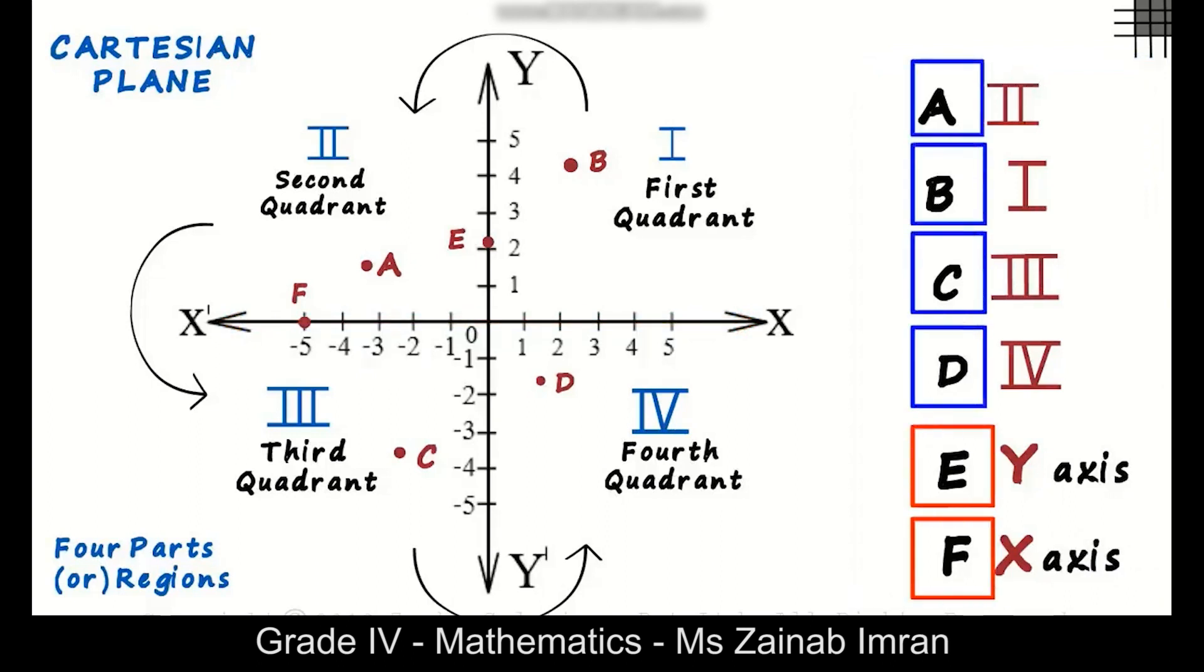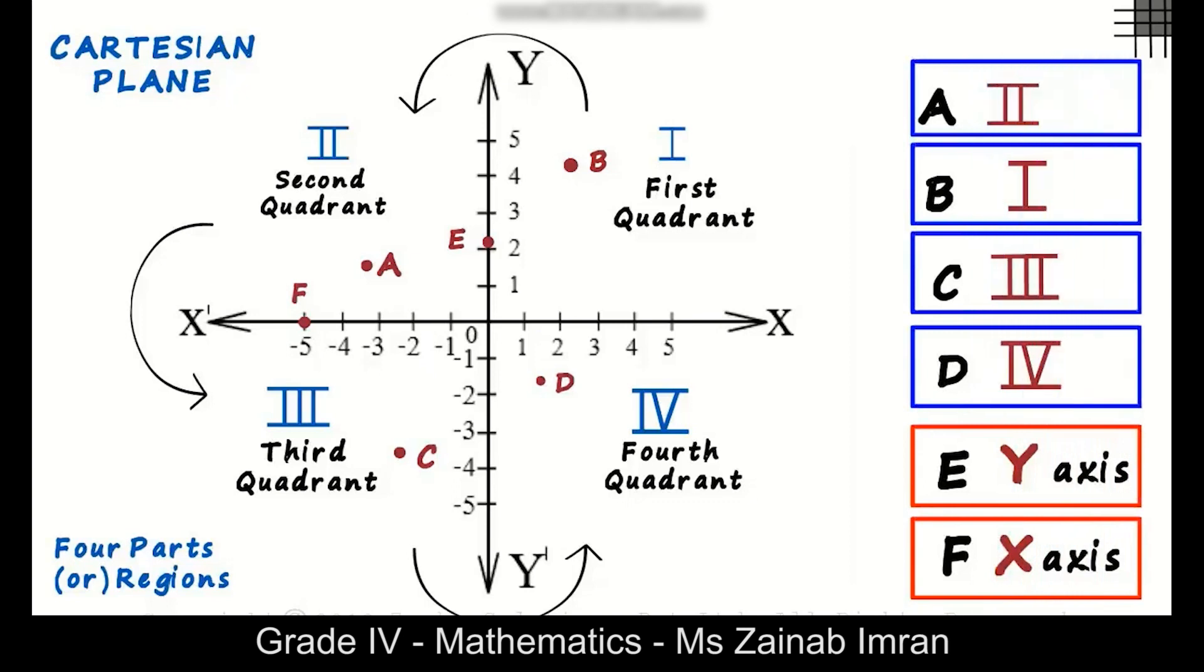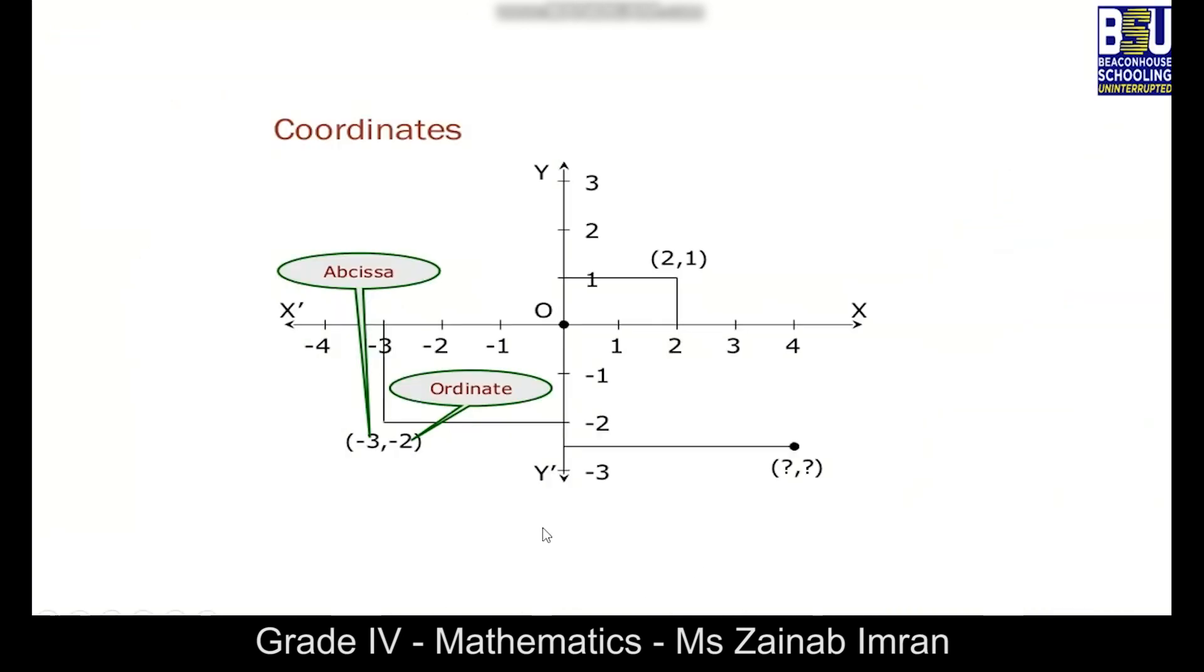What does this tell us? It means that each point on a plane lies either on one of the axes or in one of the quadrants. Now you have learned about coordinates and how to locate the points on the coordinate plane.